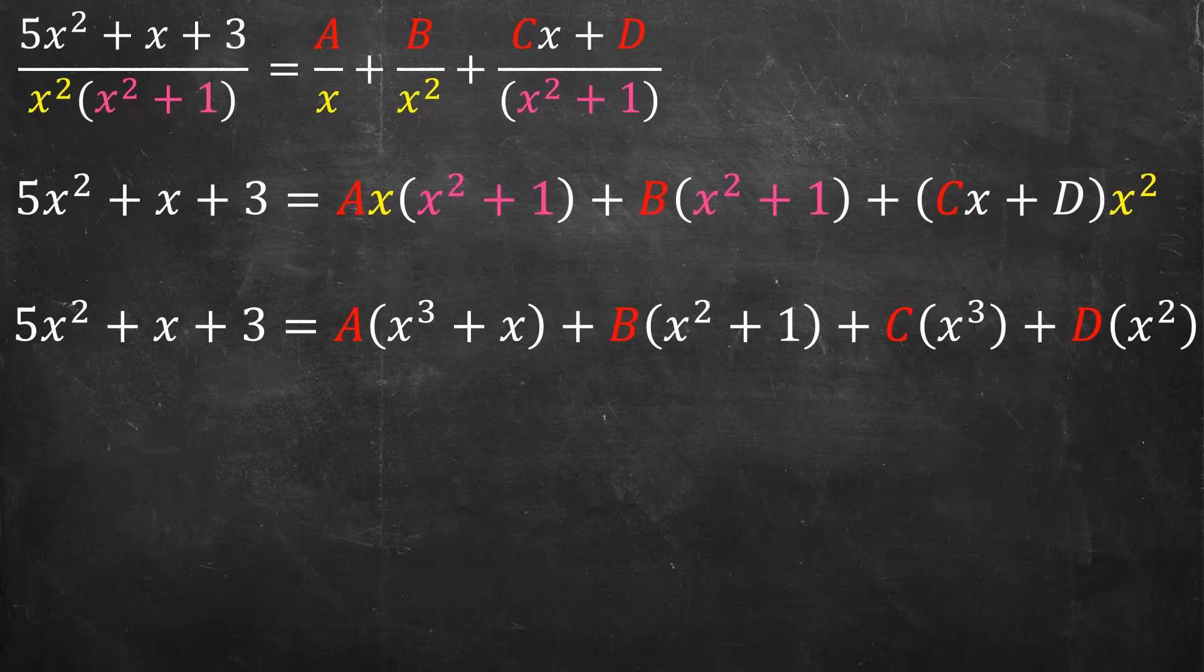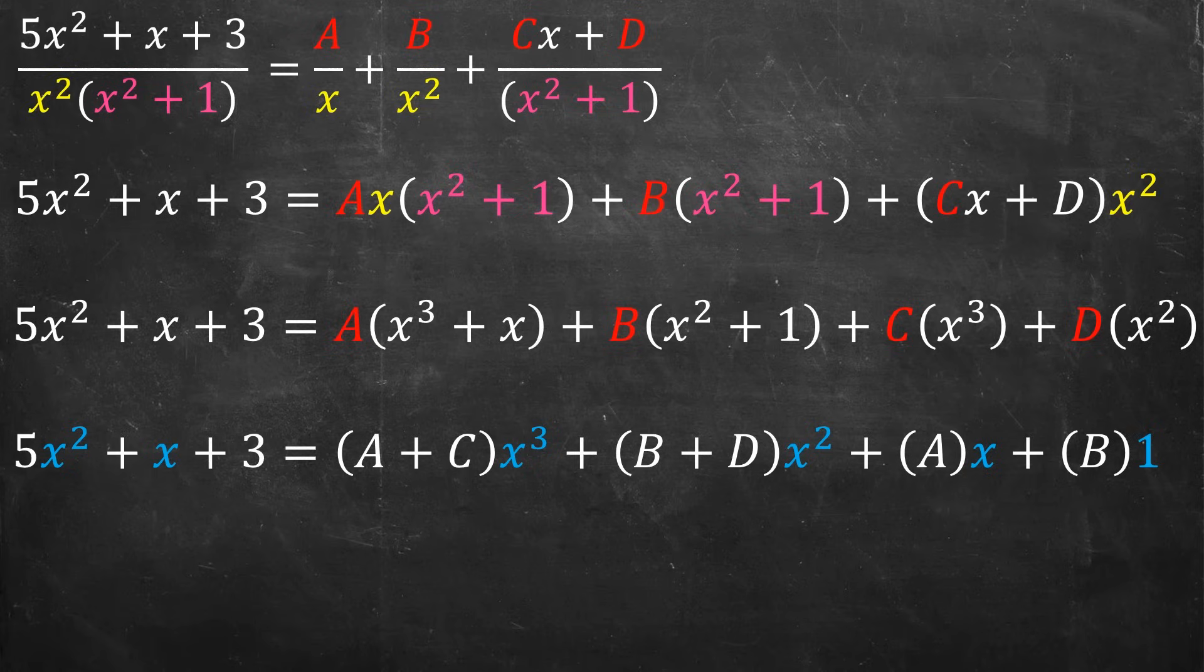Now what I want to do is a bit of a rearrangement. Instead of having it a, b, c, d times various things, I want it to be powers of x times the various constants. If I rearrange this, I can say that in front of the x cubed terms, there was one a and one c. In front of the x squared terms, there was a b and a d. In front of the x term, there was an a. And in front of the constant term, which I'll write down as a 1, there was just going to be a b. On the left-hand side, I've done nothing more than just color code the polynomials.